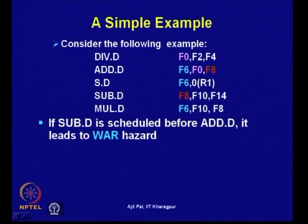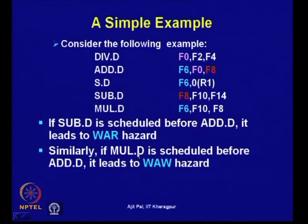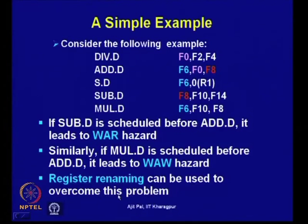If we want to avoid hazards — say, scheduling the sub-D instruction before add-D — it cannot be done because it will lead to a WAR hazard. Similarly, if multiplication-double is scheduled before add-D, it will lead to a WAW hazard. Because of these hazards, instruction scheduling cannot be done, but register renaming can be used to overcome this problem.